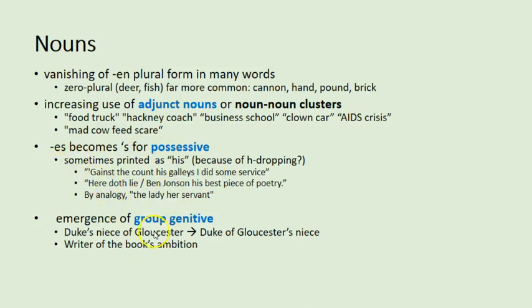We also see the emergence of what's called the group genitive. Shakespeare would often write 'the Duke's niece of Gloucester,' meaning 'the Duke of Gloucester's niece.' We get this modern form where the genitive is attached to a whole noun phrase rather than just a single noun. For example, 'the writer's ambition of the book' becomes 'the writer of the book's ambition.' This perhaps indicates why the shift occurred, because of ambiguities in the genitive. I'm going to cut this video on grammar into two or maybe three parts, so tune in to the next one on adjectives, adverbs, and verbs.